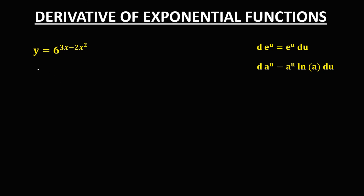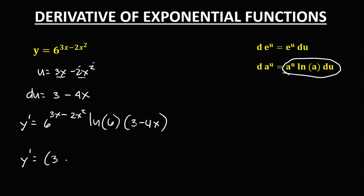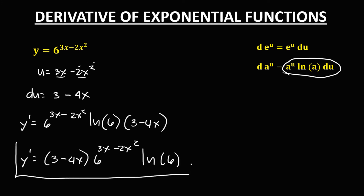Then for this given, u is equal to 3x minus 2x squared, and for the derivative of u: the derivative of 3x is 3, then minus the derivative of 2x squared, which is multiply 2 times 2, giving 4x. Using the formula to find the derivative, we have y prime equals 6 to the power 3x minus 2x squared, times ln 6, times the derivative of u, which is 3 minus 4x. Or we can rewrite this as 3 minus 4x, times 6 to the power 3x minus 2x squared, times ln 6. So this is now the derivative.